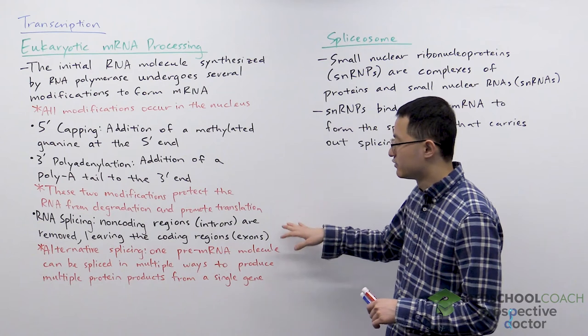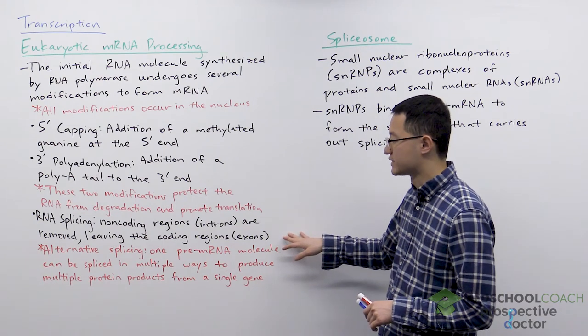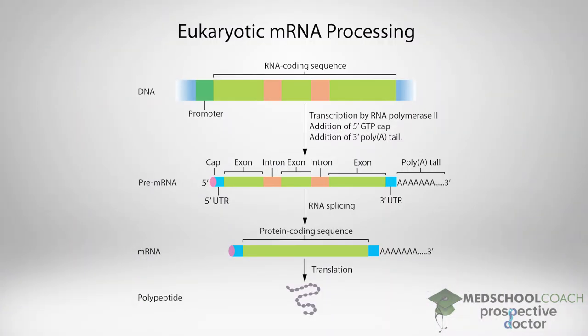The last eukaryotic mRNA processing is RNA splicing. So the pre-mRNA that is produced has nucleotides that will code for the protein as well as nucleotides that won't. Splicing is the process by which these non-coding regions called introns are spliced out or removed, and when they're spliced out that's going to leave the exons which are the coding regions of the RNA.